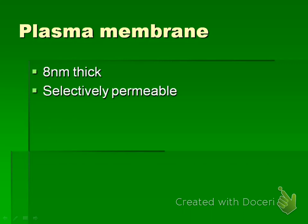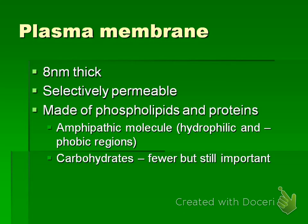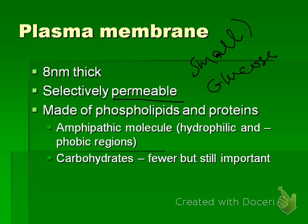A couple of interesting ideas about the plasma membrane. First, it is 8 nanometers thick — that's times 10 to the negative 9th. It is selectively permeable, meaning only certain things are allowed to go through. Most times, only small molecules like water will pass through, but large molecules like glucose and proteins will need a protein channel.